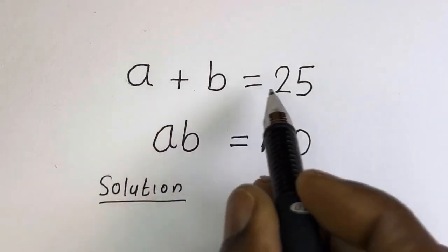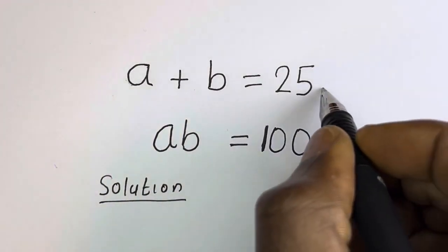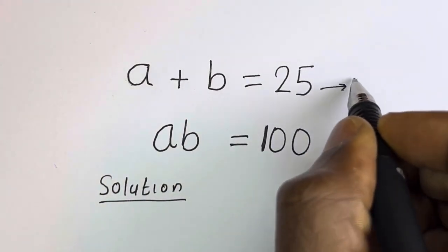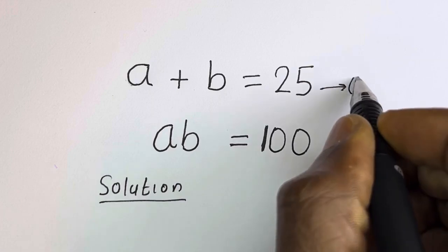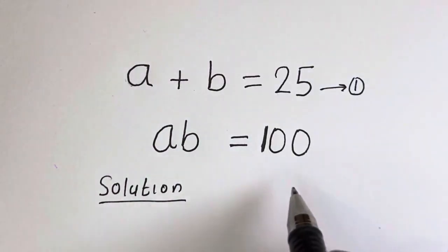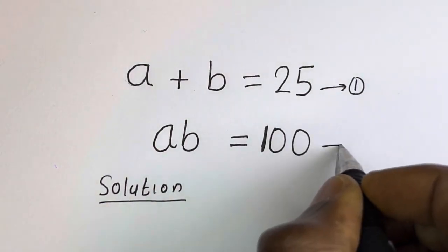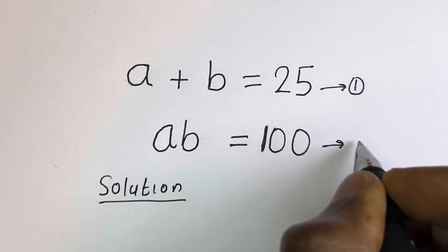A plus B is equal to 25 — let's call this equation 1. Then AB is equal to 100 — let's call this equation 2.